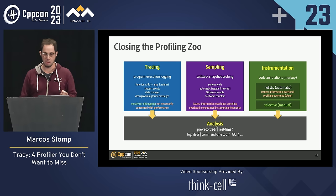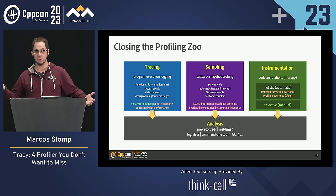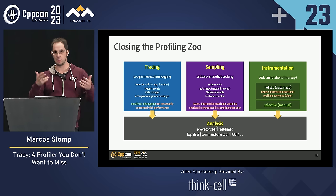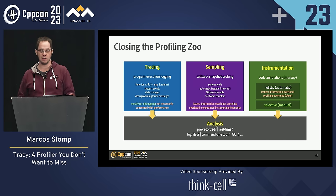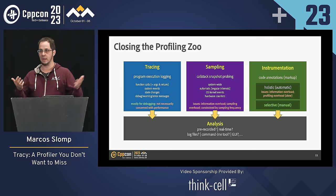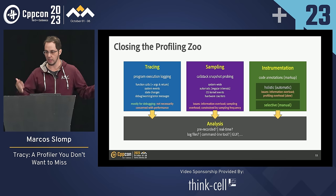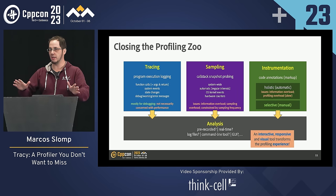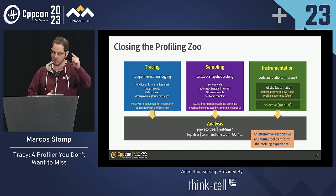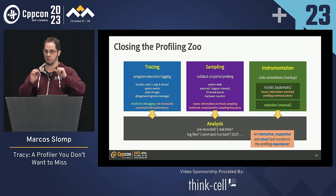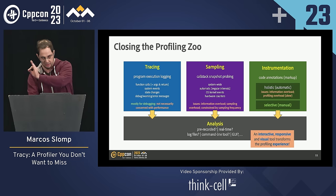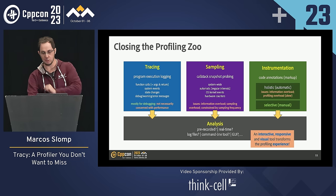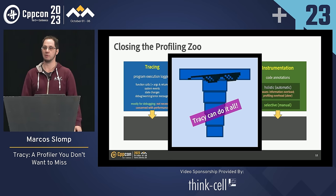With instrumentation, you go yourself and actively annotate code on portions you want to measure. Manual instrumentation is usually the wise choice, since automatic instrumentation instruments everything and adds too much overhead for tiny routines. Then there's the analysis part: can you interact with the profiler in real time, or do you prerecord? What Tracy defines is that it's interactive, responsive, and very visual. The cool thing is Tracy can do tracing, sampling, and instrumentation — all for you.